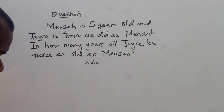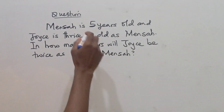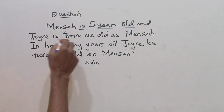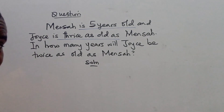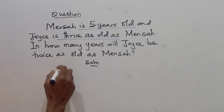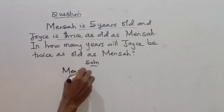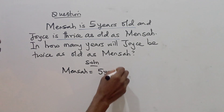So the first thing is, let's begin to interpret the problem step by step. Mensa is 5 years old and Joyce is twice as old as Mensa. Let's first of all interpret that. So Mensa is equal to 5 years old.